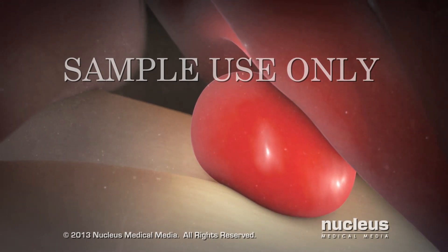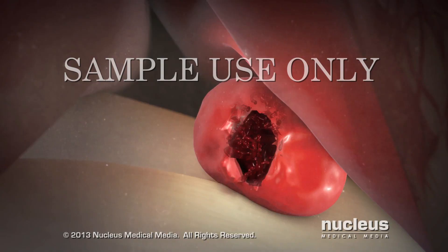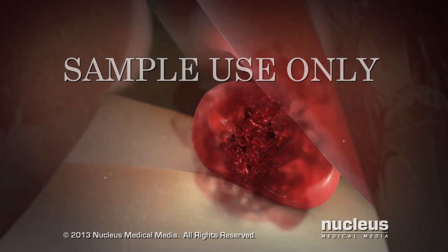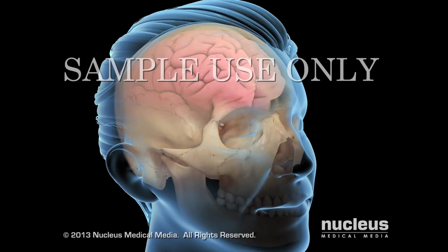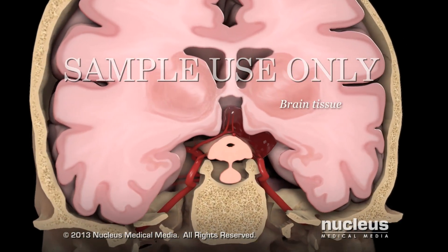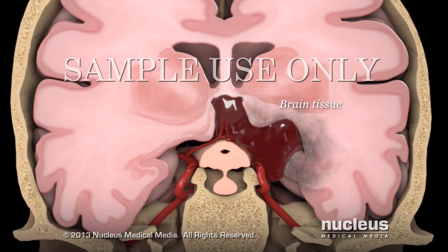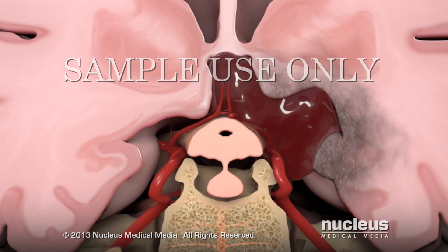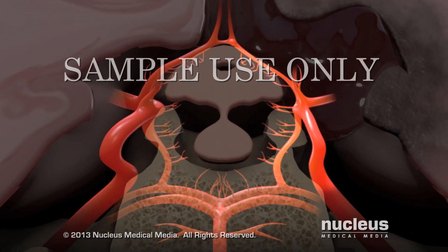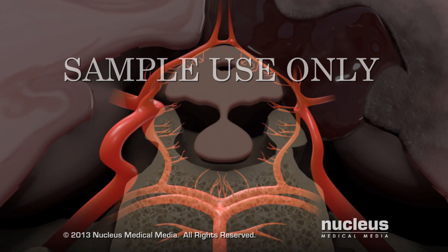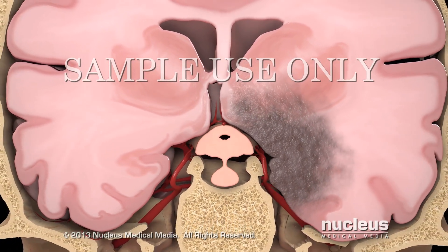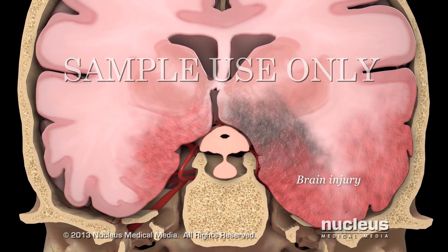If its wall gets too thin, the aneurysm can burst or rupture and spill high-pressure blood into the space around your brain. The blood presses on your brain tissue and can cause injury to your brain cells. Chemicals in the escaped blood can irritate other brain arteries and cause them to narrow. As a result, your brain can swell, leading to serious brain injury.